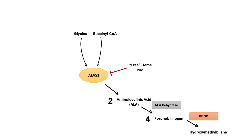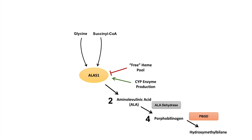Whatever regulates ALAS-1 determines whether a person has neurovisceral symptoms. One of the main regulators is the free heme pool. At the end of the heme synthesis pathway, heme is the end product, and it negatively feeds back on ALAS-1 to stop making more heme - so heme inhibits this enzyme. However, anything that utilizes heme activates ALAS-1. One example is CYP450 enzyme production in the liver: making CYP enzymes requires heme, depleting the free heme pool and activating ALAS-1.